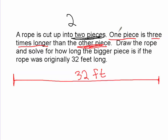One piece is three times longer than the other piece. What that means is that this piece will take up basically three parts. And then the second piece, which is the smaller piece, will only take up one part. So here's the one part.